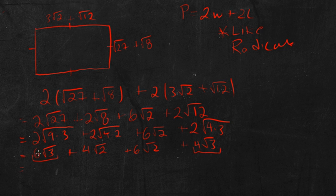So I can add those together. So 6 root 3 plus 4 root 3 is 10 root 3, and then I have 4 root 2 and 6 root 2. Add those together, I get 10 root 2.